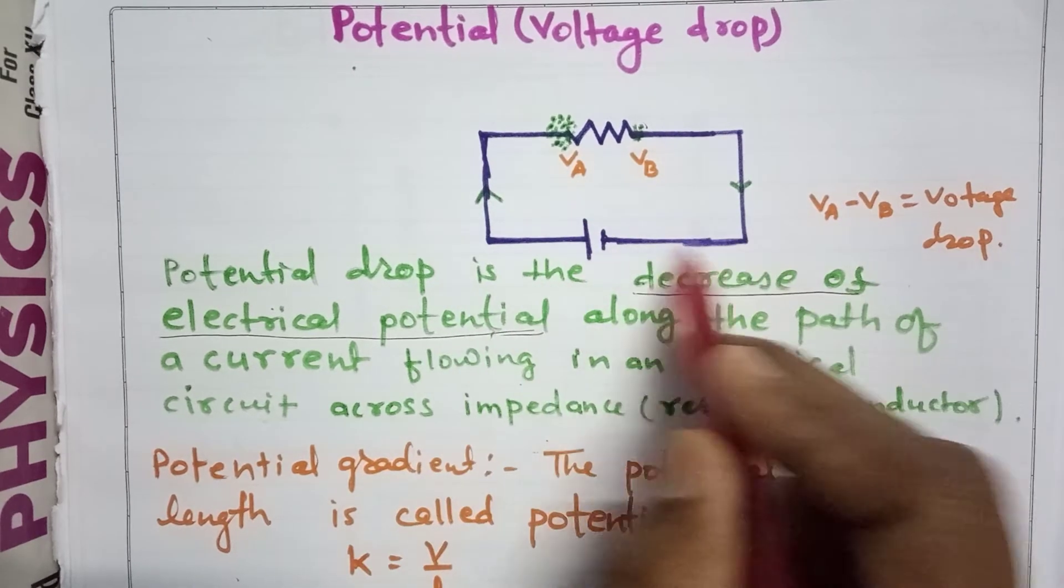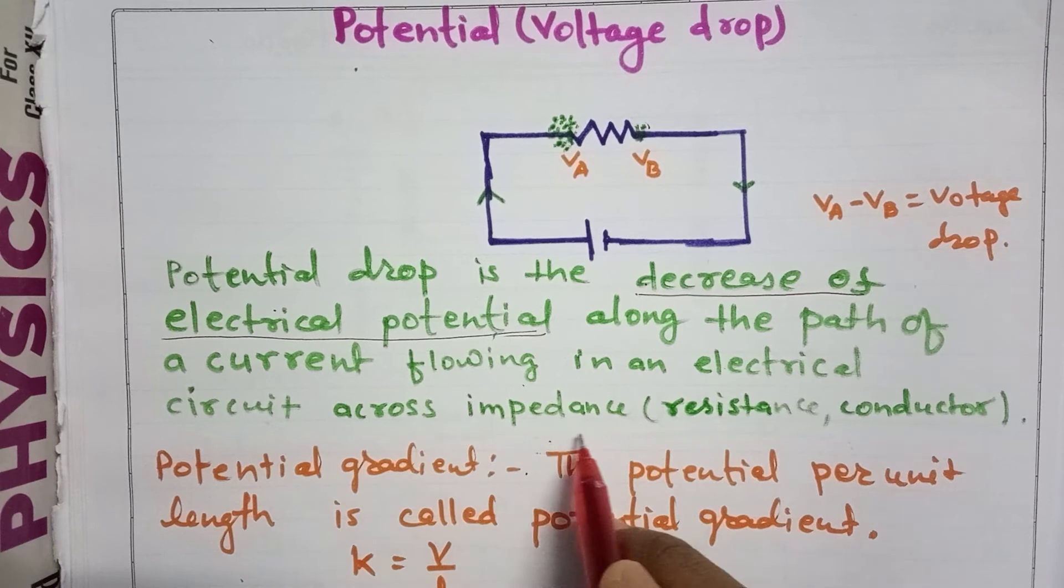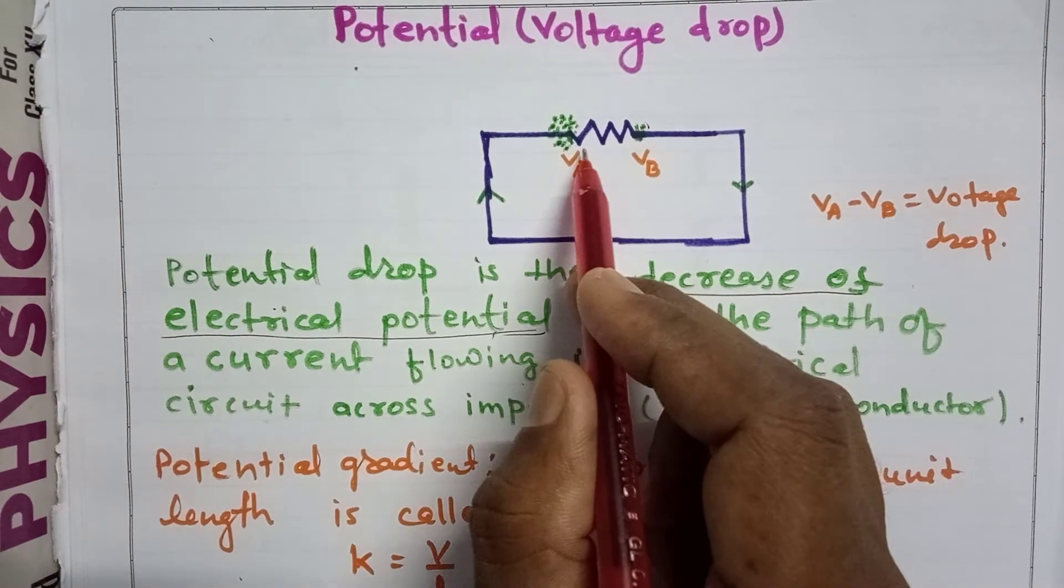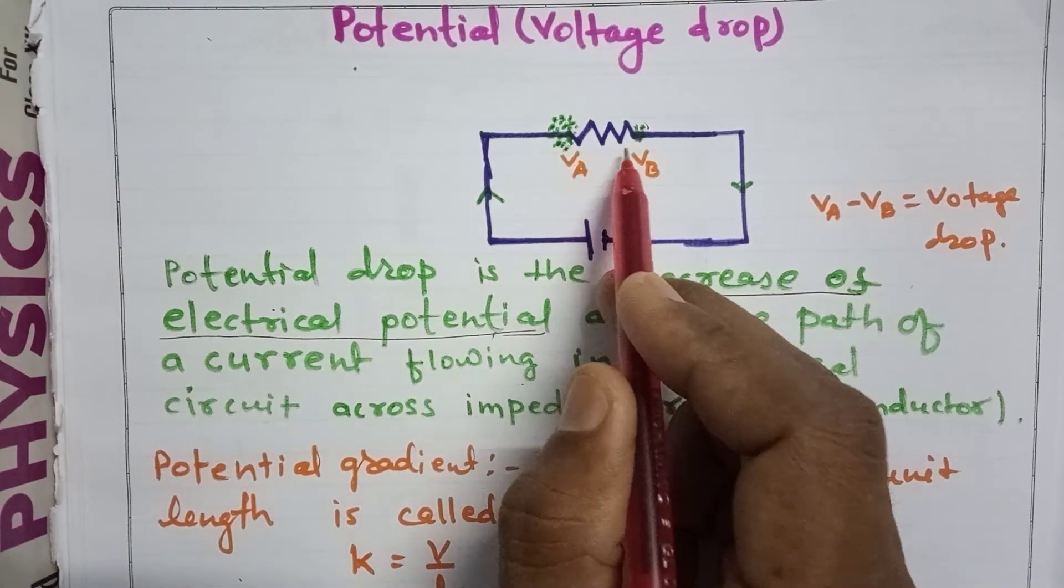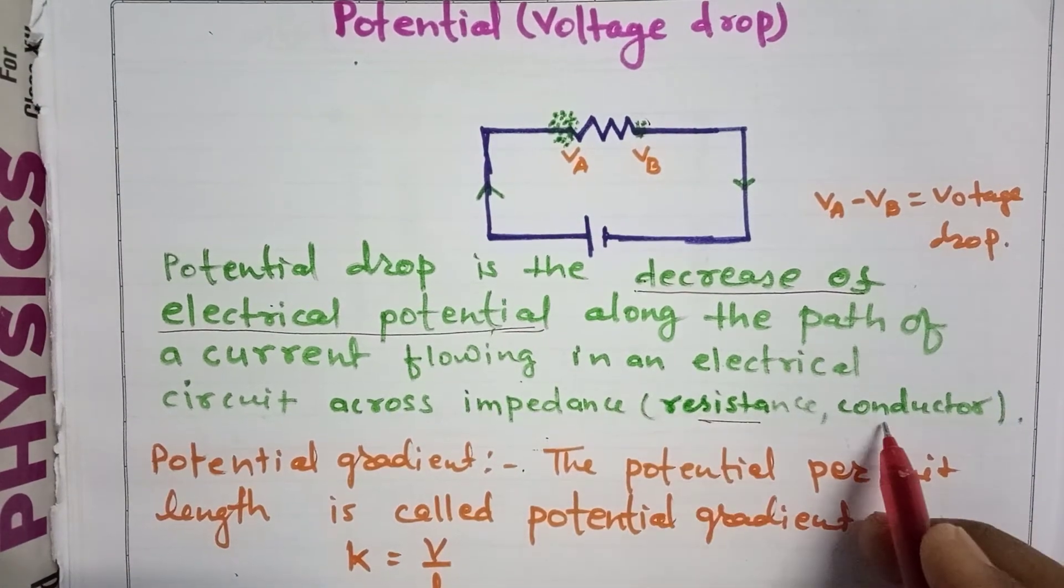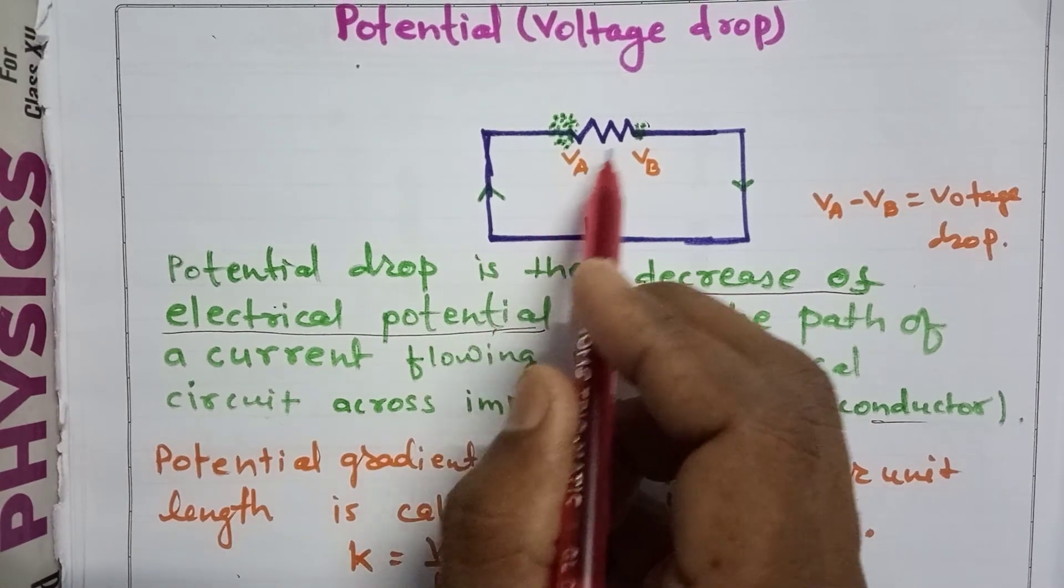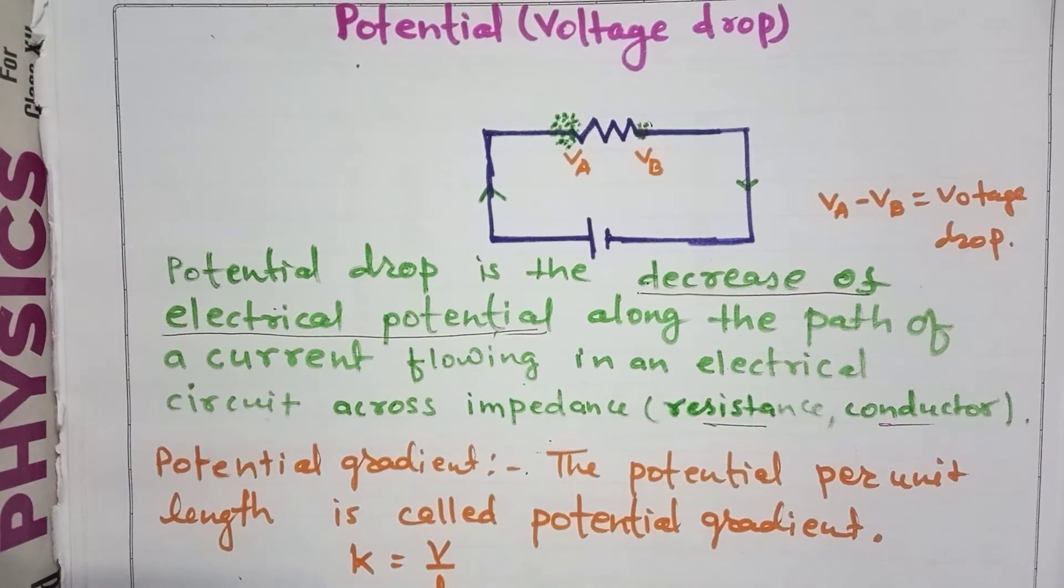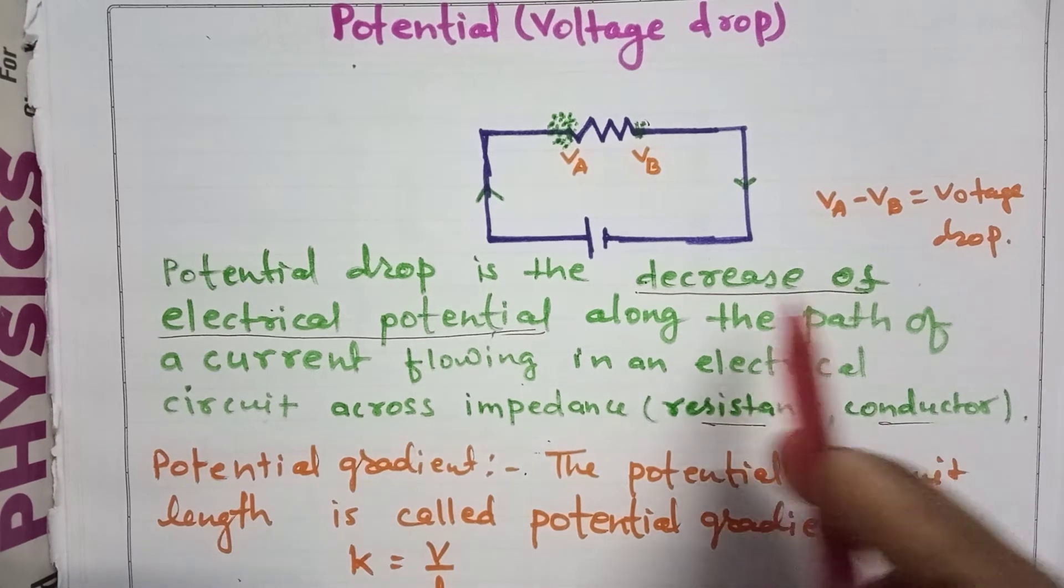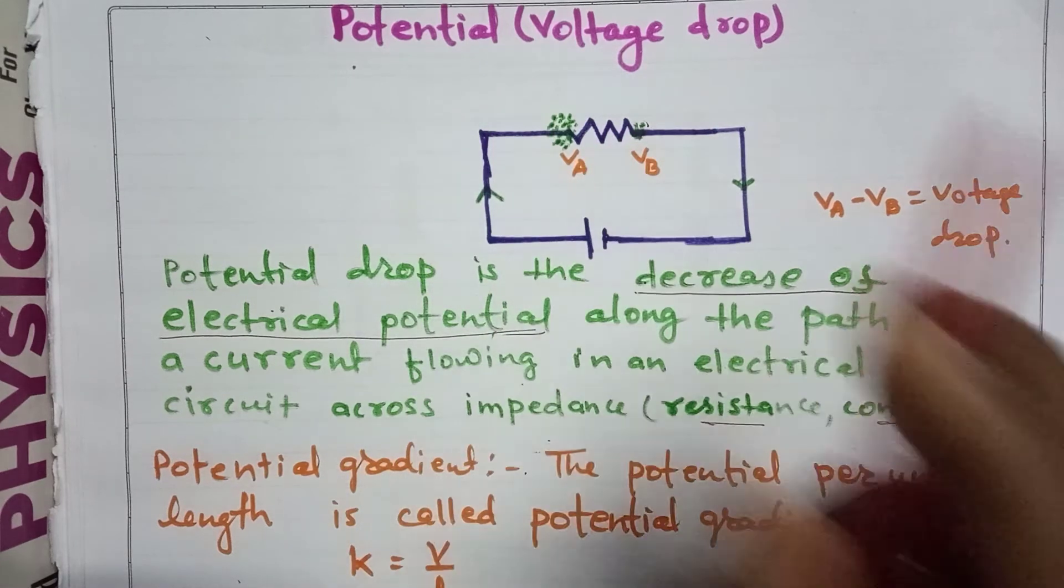This path is where the current flows, and it is an electrical circuit across impedance. Impedance is the opposition to charge flow, which includes resistance and conductors. The decrease of electrical potential along the path of current is called potential drop.